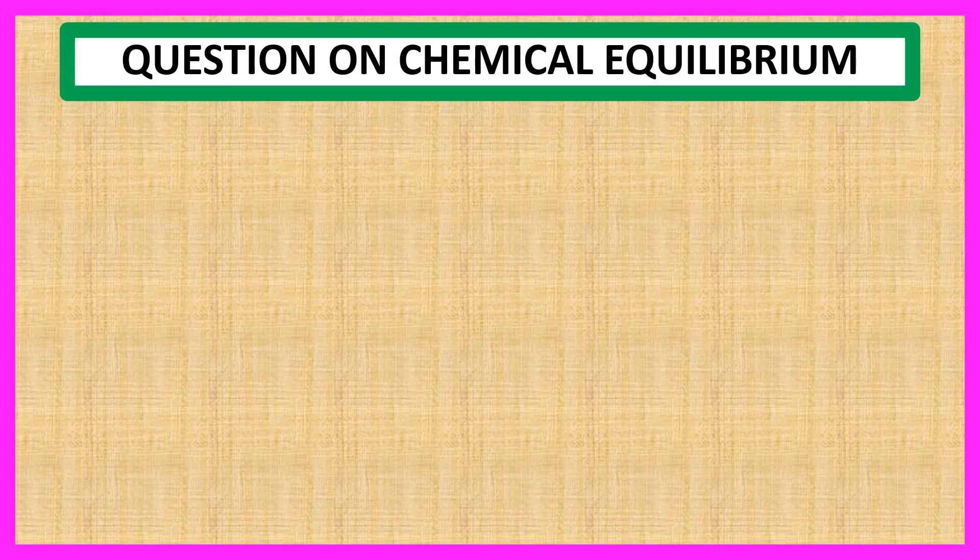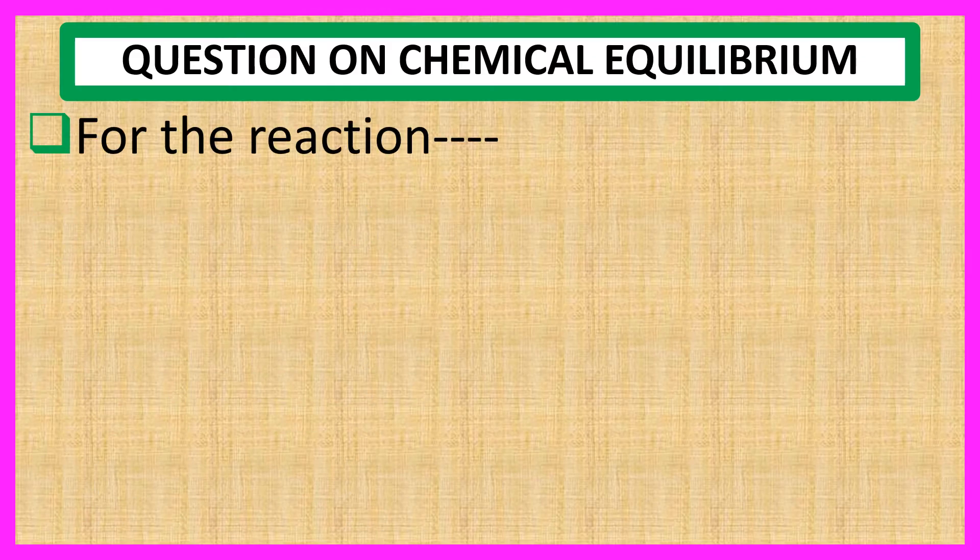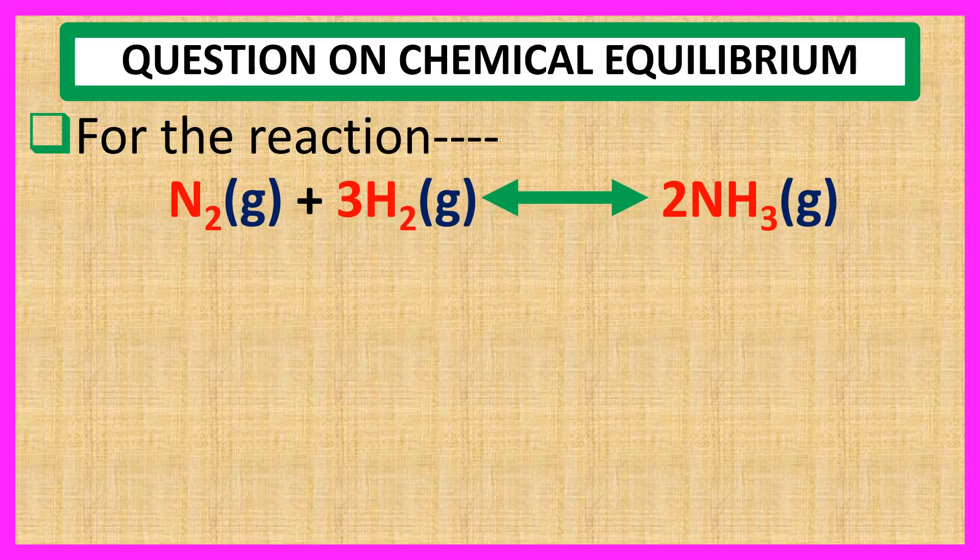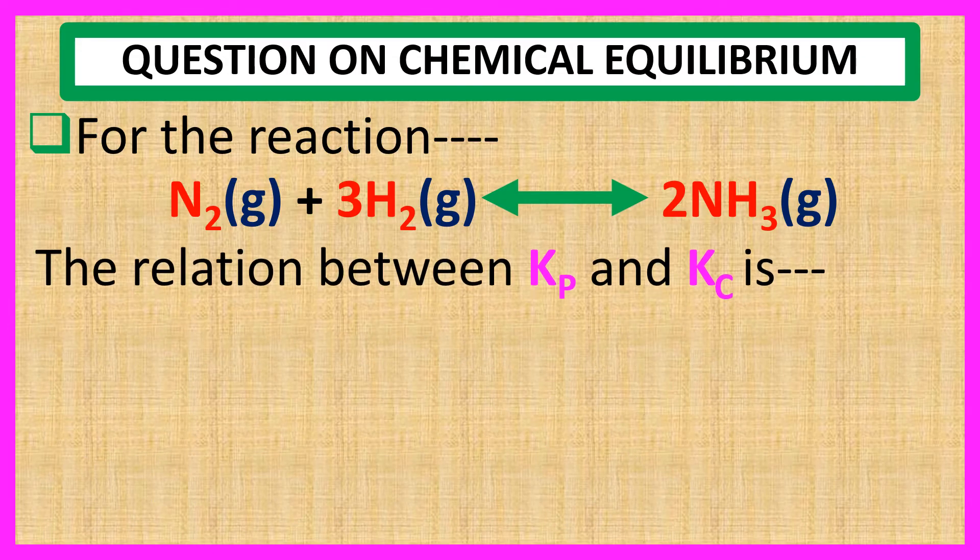Welcome everyone. Question on chemical equilibrium. For the reaction N2 gas plus 3H2 gas to 2NH3 gas, the relation between Kp and Kc is: